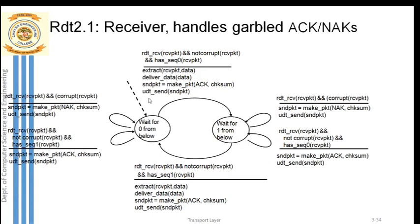All three conditions are checked at the receiver side: the duplicate packet condition, the corrupted packet condition, and the not-corrupted packet with proper sequence number condition. The receiver then moves to the new state of waiting for the next packet. In the second state, waiting for packet with sequence number one, the same condition checking applies - if the received packet is corrupted, create a negative acknowledgement, add checksum, and send it to the sender.